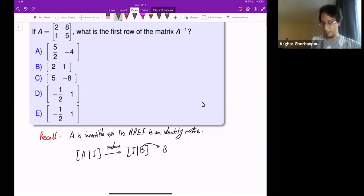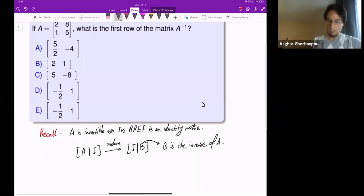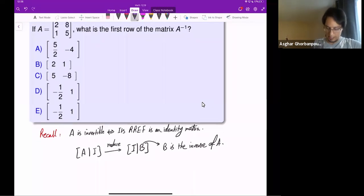Okay, so in the examples in the questions like this, we start with [2 8 | 1 0; 1 5 | 0 1] and try to row reduce it.